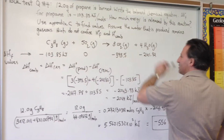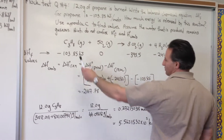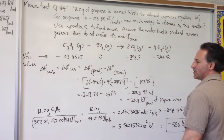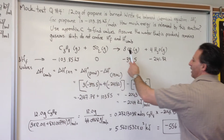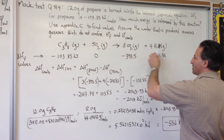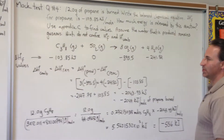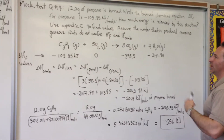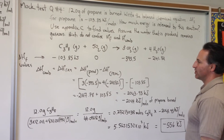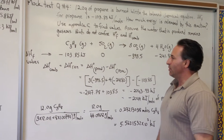The first step is to balance the equation for the combustion of propane. Propane has the formula C₃H₈. Whenever you combust something, you need oxygen. If it's a full combustion reaction, you're going to get carbon dioxide and water only. Only when you have incomplete combustion do you get other things like soot and carbon monoxide. We're going to assume this is a complete combustion reaction.